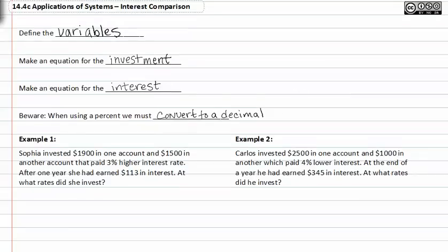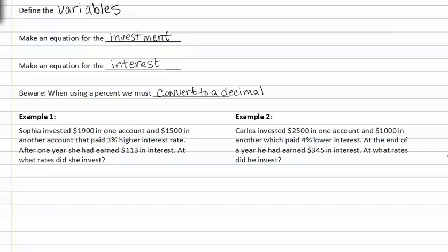Let's look at example one. Sophia invests $1900 in an account, and $1500 in another account that paid 3% higher interest. After one year she had earned $113 in interest. At what rate did she invest?